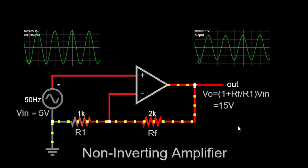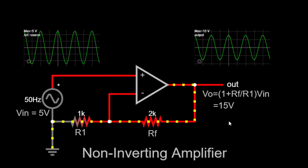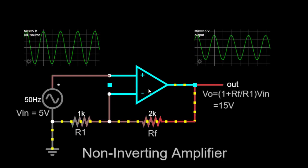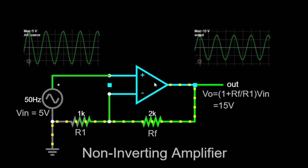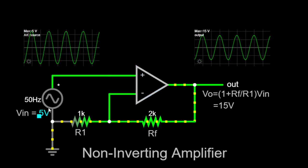Let's take a look at the circuit we will be simulating. A non-inverting amplifier consists of an operational amplifier (op-amp), two resistors, and an input signal source.